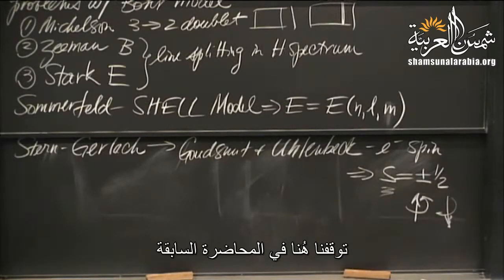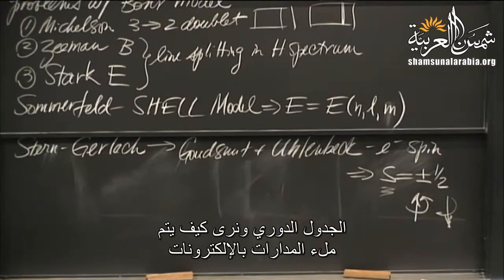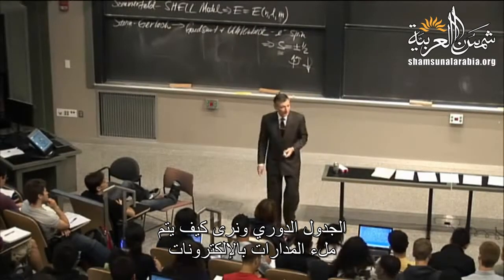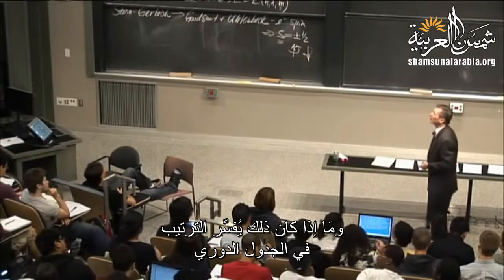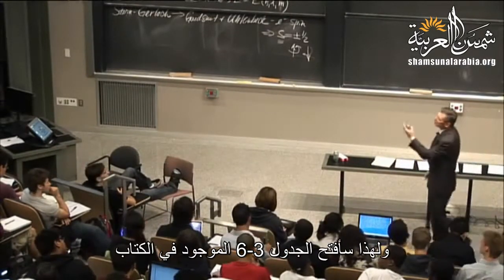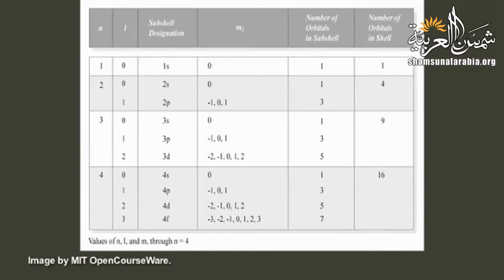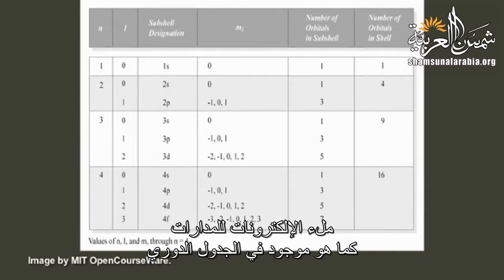Now I'd like to take a look at the periodic table and get a sense of electron filling, and whether that explains the trends in the periodic table. We're going to go to table 6-3 in your reading and ask: can we use this idea of n, l, and m to explain the order of filling in the periodic table?